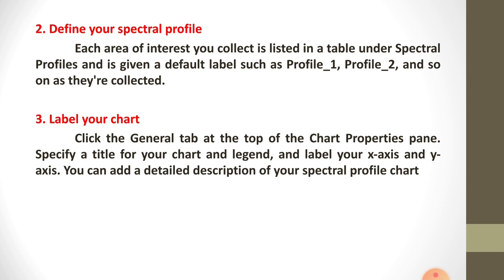This is the whole information about exercise number 4 — Generation of Spectral Profiles of Different Objects. Spectral profile means it is a multispectral imagery and a powerful tool for distinguishing different types of materials and features in the landscape. How to generate the spectral profile includes three steps: first, define an area of interest; second, define your spectral profile; and third, label your chart.